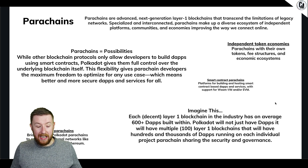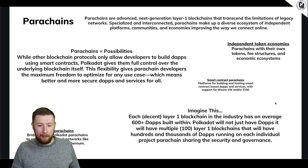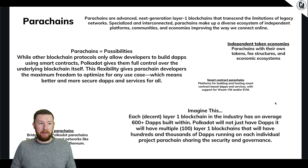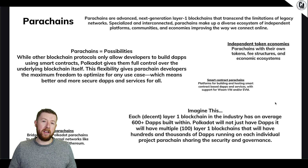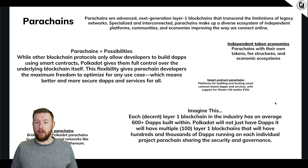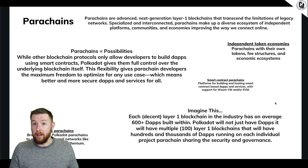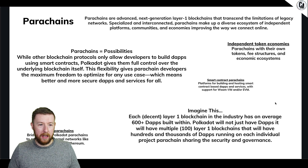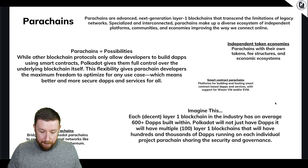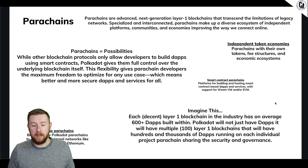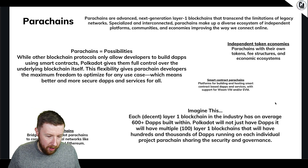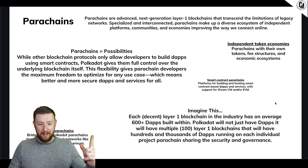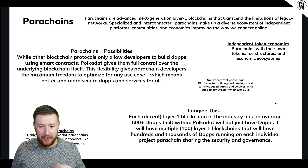Smart contract parachains like Moonbeam enable you to connect to the Ethereum network, which is already huge. Consider this: every layer one blockchain on average has about 600 dApps running within it. Polkadot will have up to 100 parachains - 100 layer one blockchains running on one relay chain - and each one could have 100 to 1000 dApps. That is a lot of transactions going through a sharded multi-chain, and that is why it is a layer zero and not a layer one.